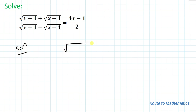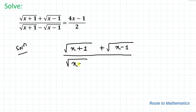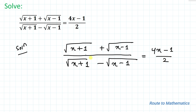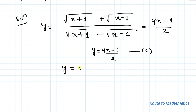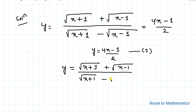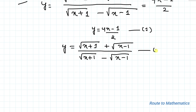Our given equation is: (√(x+1) + √(x-1)) divided by (√(x+1) − √(x-1)) equals (4x − 1) divided by 2. Let's take the whole equation equal to y. So from above we can write y = (4x − 1)/2 — let's call this equation 1. We can also write y = (√(x+1) + √(x-1)) / (√(x+1) − √(x-1)) — let's call this equation 2.